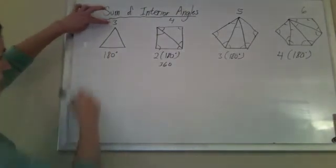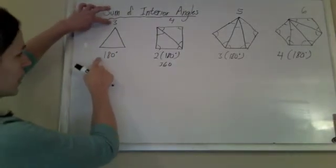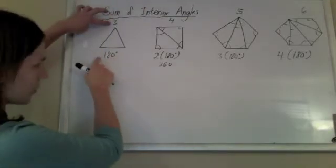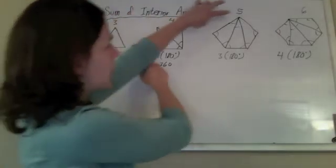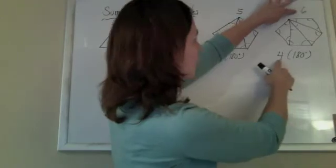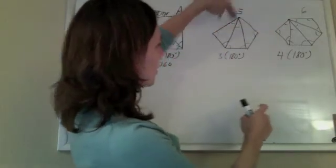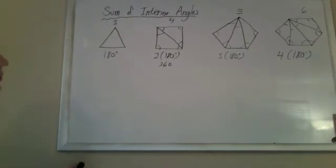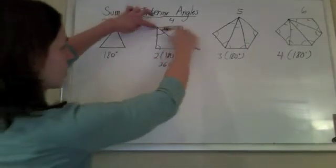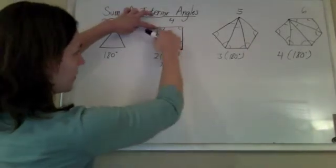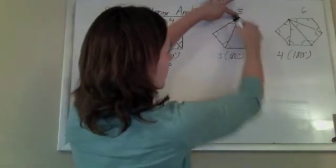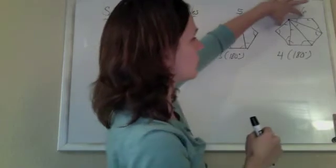You notice that if I have three sides, I have one triangle; four sides, two triangles; five sides, three triangles; six sides, four triangles. I always have two less than the number of sides, because I couldn't draw a triangle for that one and that one. I could only draw for those. So there's always two bum sides.